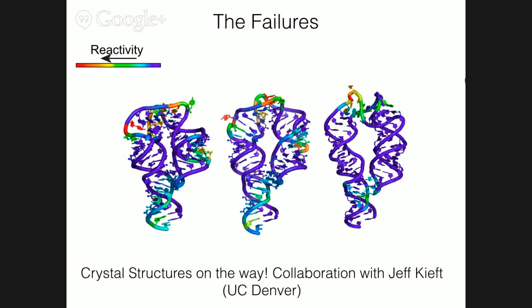Also to point out, three of the 16 did not work, and you can see in the tetraloop receptor there's increased reactivity. But of course, this comes back to the question of which motifs are good and which are bad. We need to somehow take this data and figure out exactly which motifs are good to use and which ones are not.